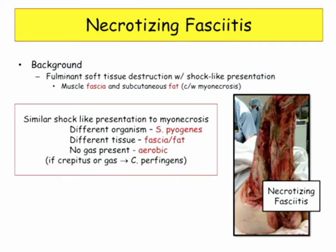Now we'll do necrotizing fasciitis — a different infection. This is a different bug, and it can be confusing. Necrotizing fasciitis involves soft tissue destruction with a shock-like presentation. It affects muscle fascia and subcutaneous fat, as opposed to myonecrosis which involves literally muscle tissue. The organism is group A strep — Strep pyogenes — and there is no gas. This is an aerobic infection.